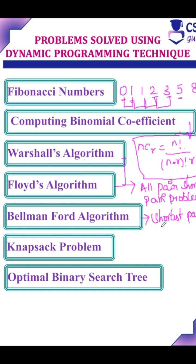Bellman-Ford algorithm is used to find the shortest path from a source vertex to all other vertices in the given graph.